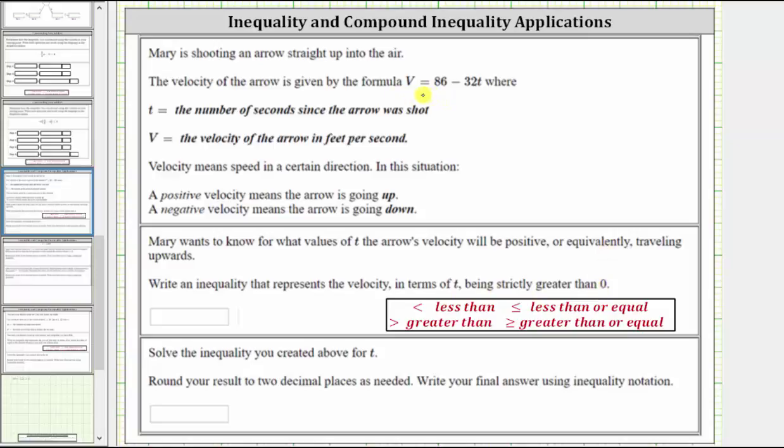Because the velocity equals 86 minus 32t, the inequality is 86 minus 32t is greater than zero. This represents the values of t where velocity is positive. Next, we're asked to solve this inequality. Let's do this on the next slide.